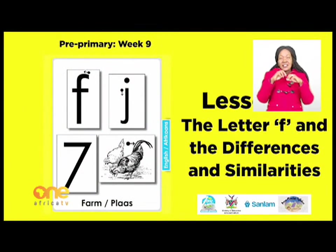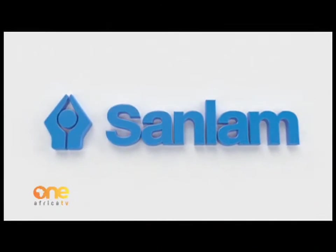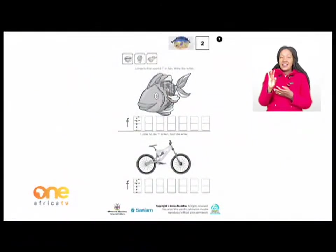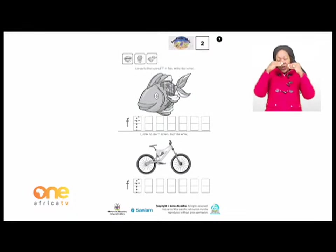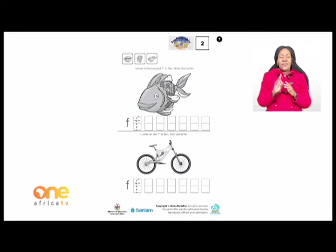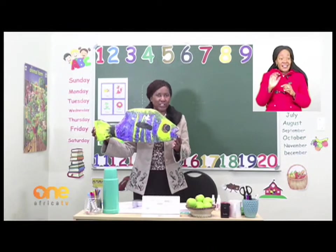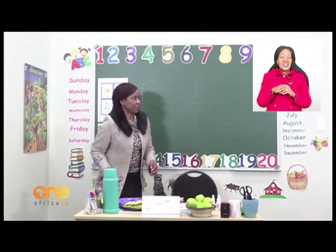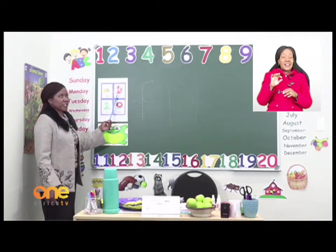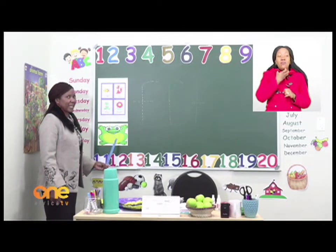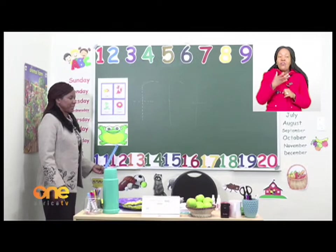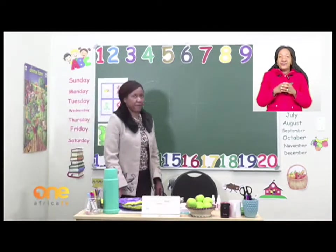Today's lesson is letter F and the differences and similarities. On page seven of our booklet, it shows that we need to learn how to write letter F. Letter F stands for fish — you can see the one I have. Letter F: fish, fox, frog, flower. And I have a bigger frog here.